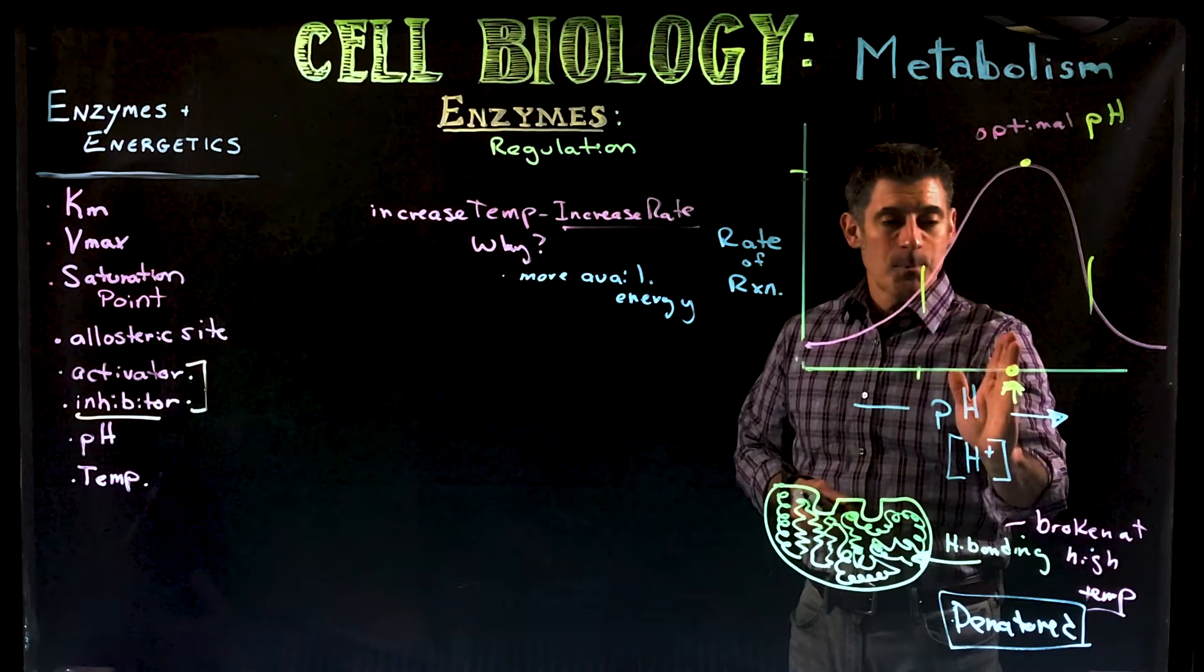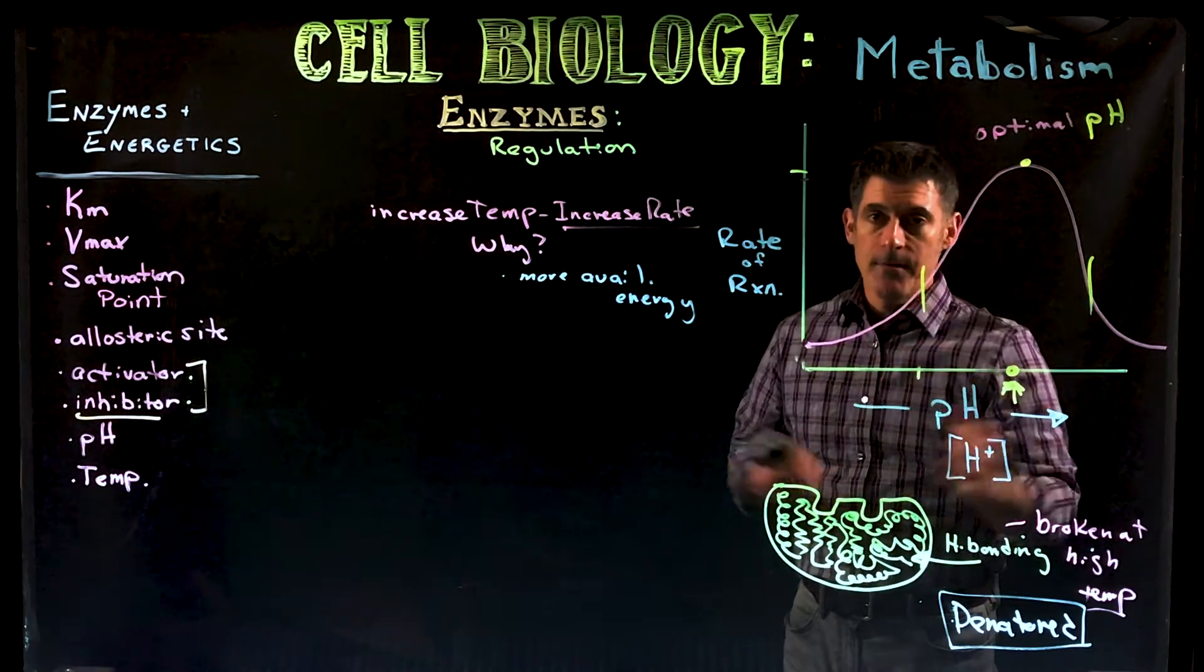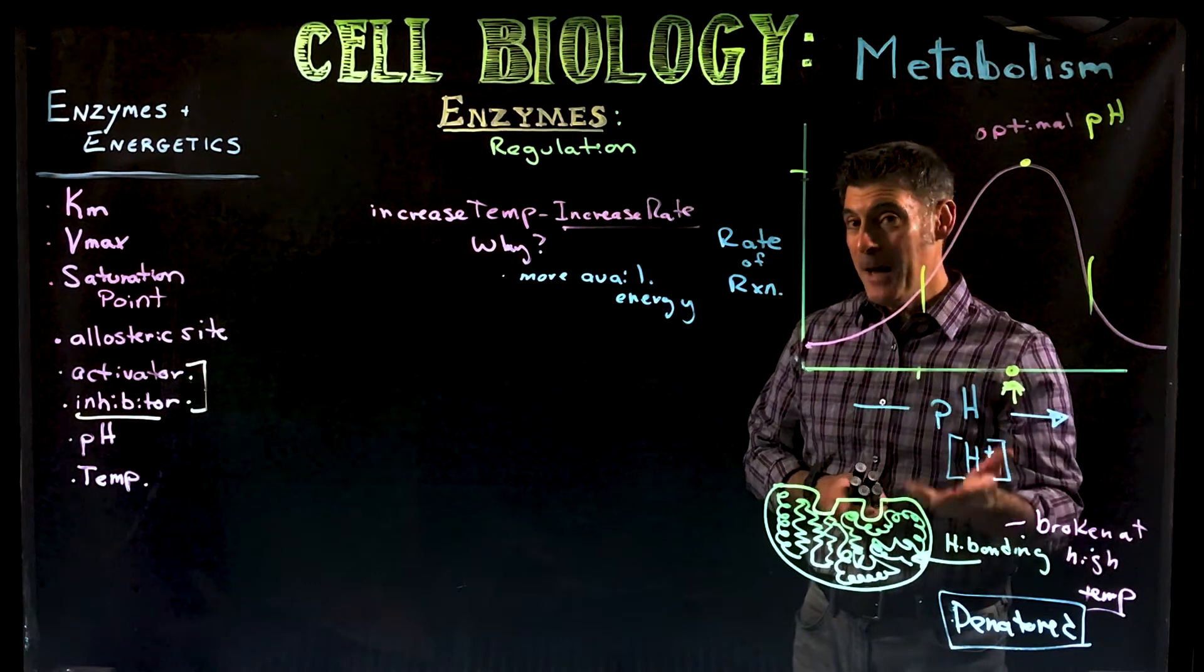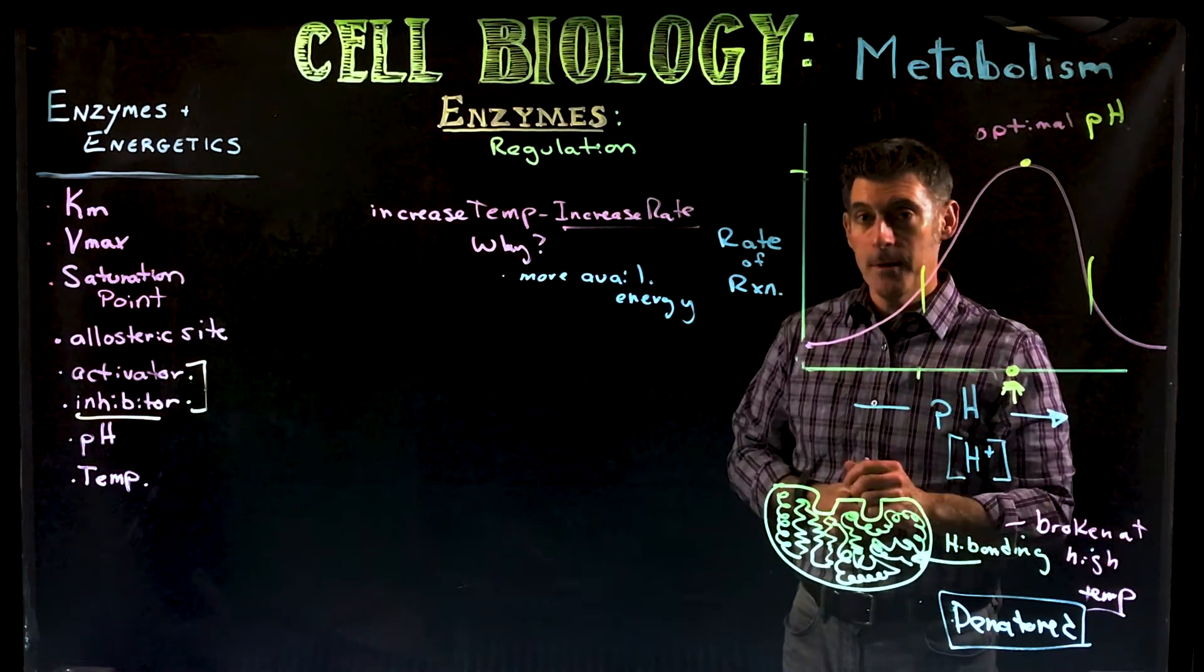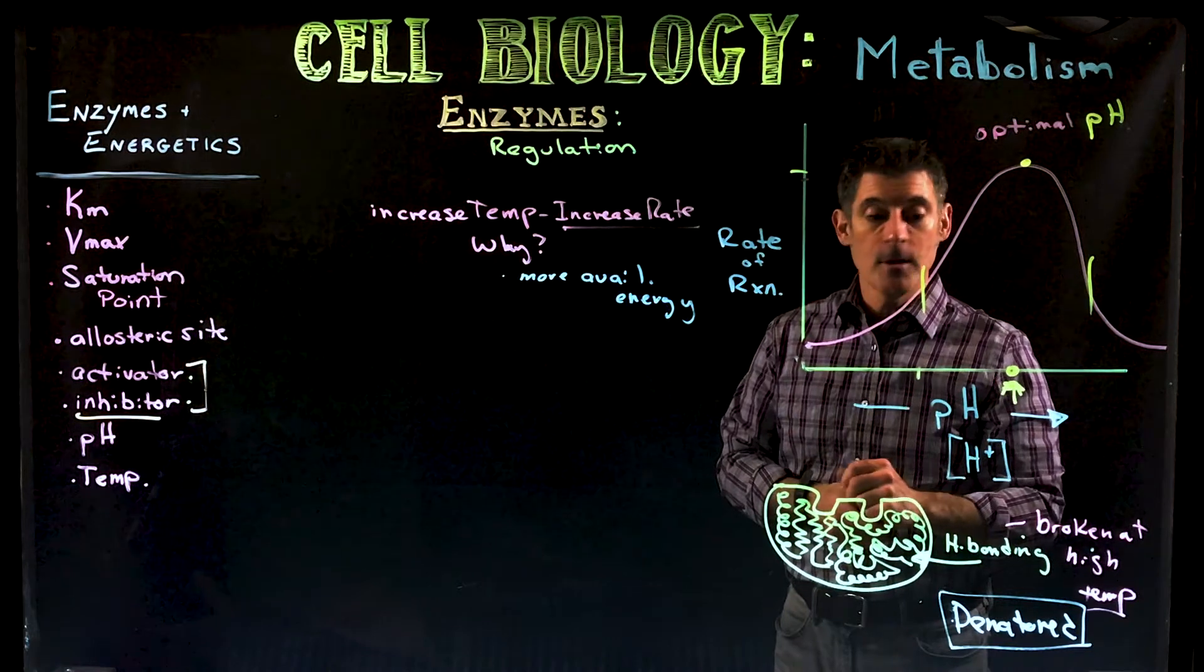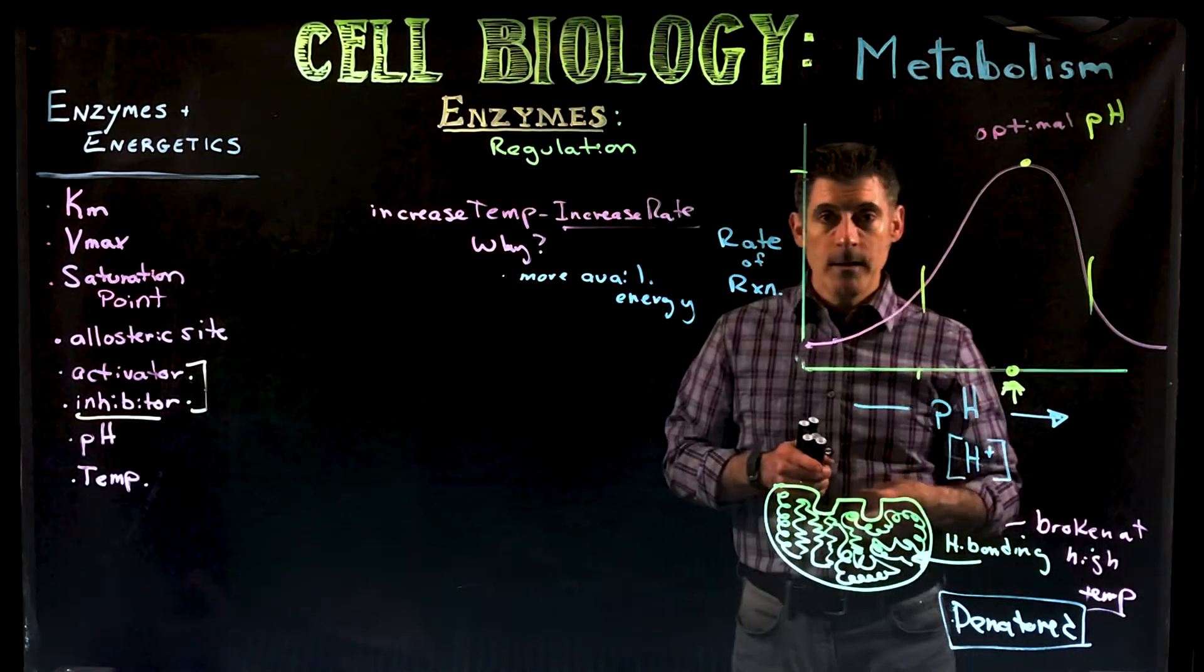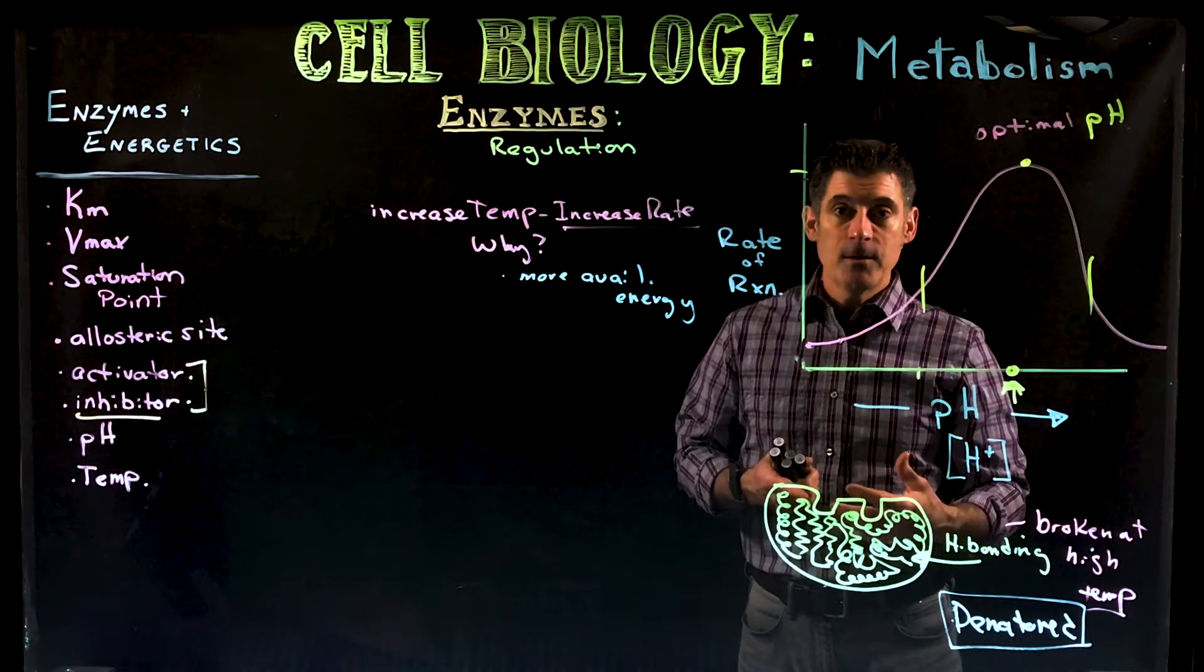So, and again, what is optimal pH? It's different. It's different for different enzymes. Even now, in your body, optimal temperature for most of the enzymes is pretty much the same, because of your body temperature. Optimal pH is very different. Enzymes that work well in your stomach work well at a pH of two.